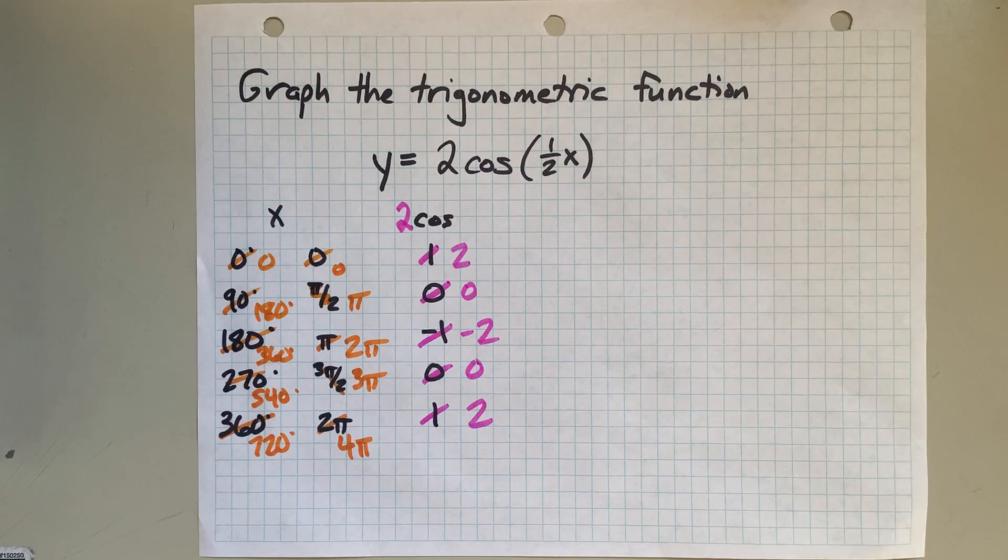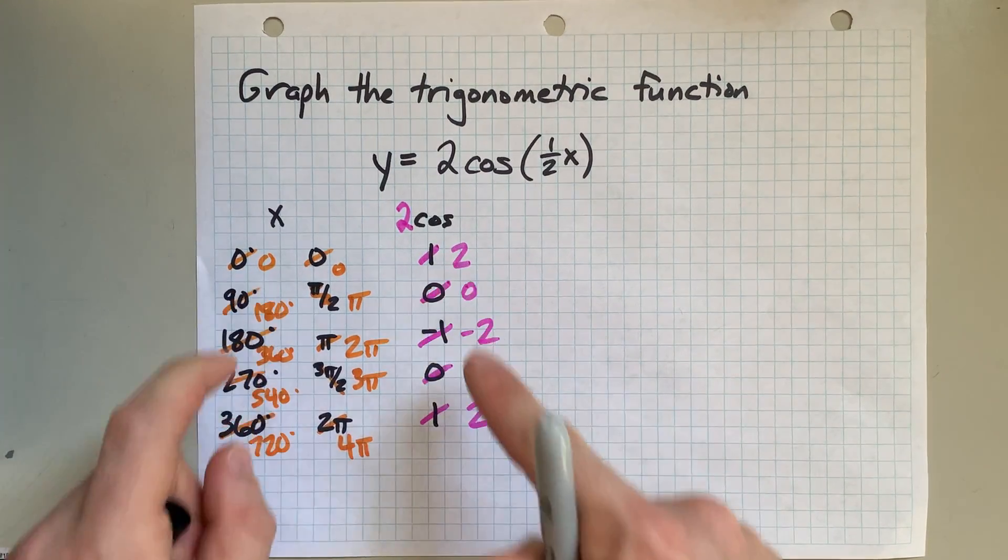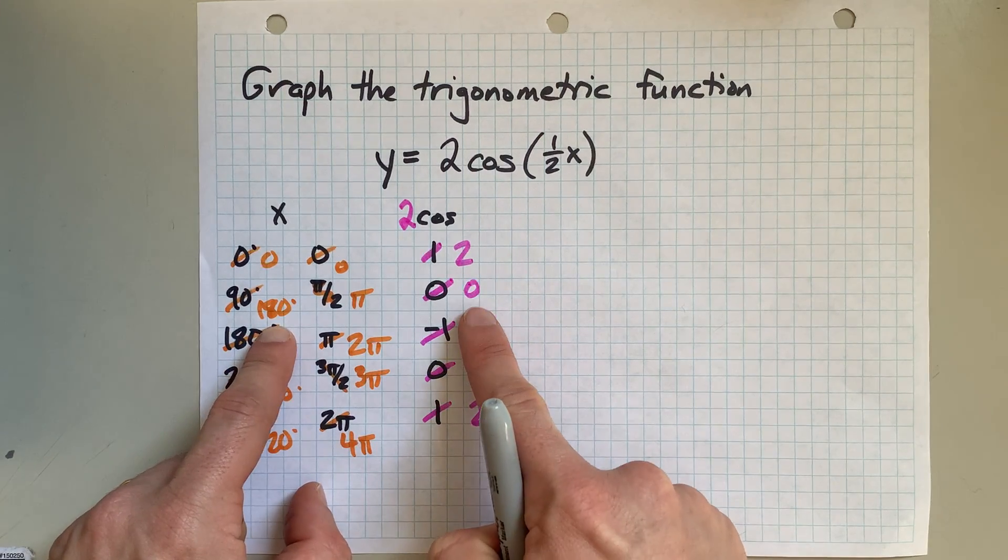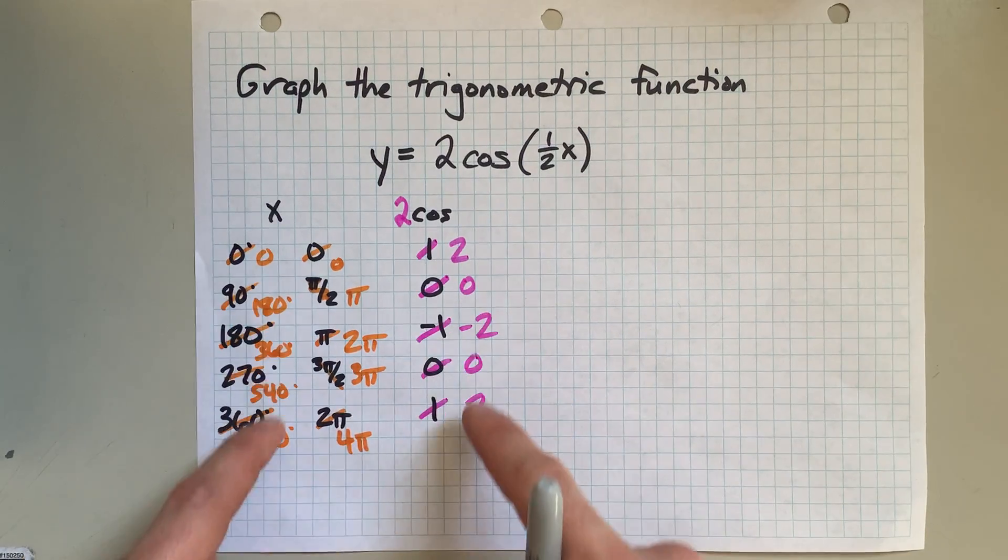So, the function itself has points at 0, 2. And then 180 degrees, 0. And 360 degrees, negative 2, etc, etc.